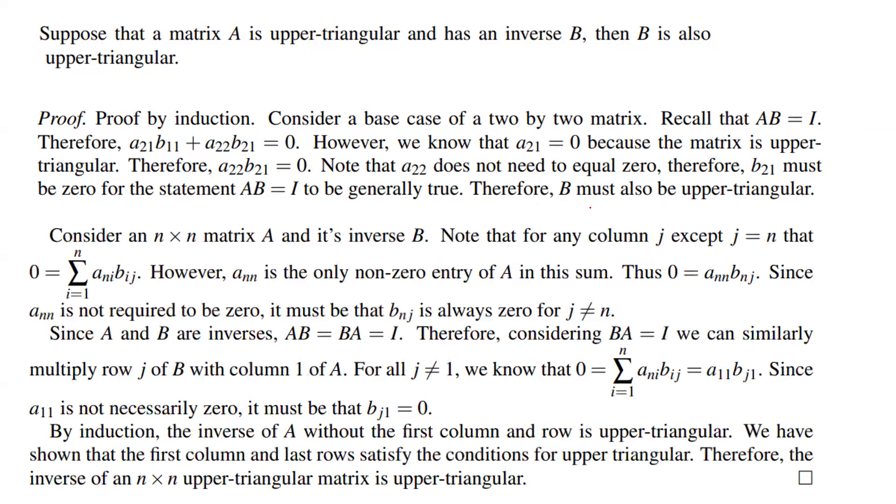Now you can generalize the case to higher sizes of the matrix. Consider an n by n matrix A and its inverse B. Note that for any column j except j = n, that 0 = Σaₙⱼbⱼᵢ. However, aₙₙ is the only non-zero entry of A in this sum. Thus 0 = aₙₙbₙⱼ.